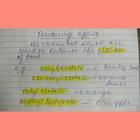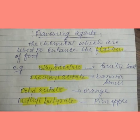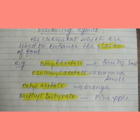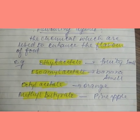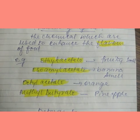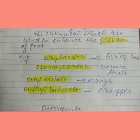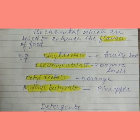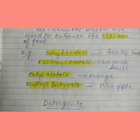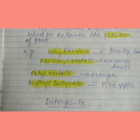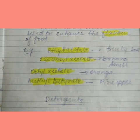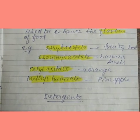Next are flavoring agents — chemicals used to enhance the flavor of food. Ethyl acetate has a fruity smell, amyl acetate has a banana smell, octyl acetate has an orange smell, and methyl butyrate has a pineapple smell.